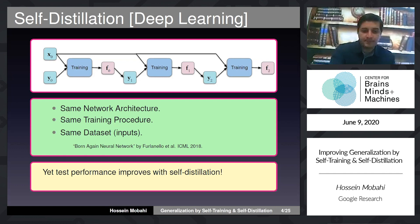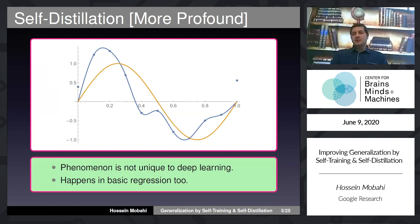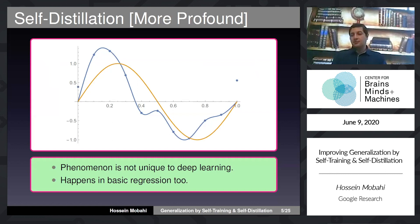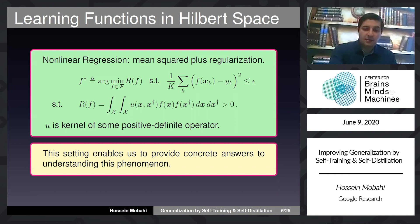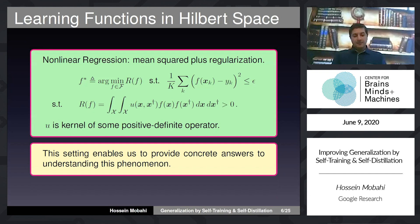Once we started studying this problem more closely, we realized this is a more profound phenomenon. It's not unique to deep learning — although we should be thankful to the deep learning community for first observing it. We now know that this also happens in more basic regression scenarios, even simpler setups. I will use a simple regression setup to present my analysis and explain why self-distillation can improve generalization, because it's mathematically easier to analyze.